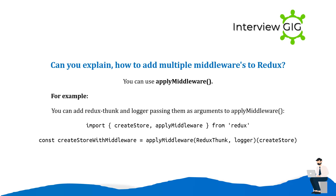Can you explain how to add multiple middlewares to Redux? You can use applyMiddleware. For example, you can add Redux Thunk and logger, passing them as arguments to applyMiddleware: import { applyMiddleware } from 'redux'; const createStoreWithMiddleware = applyMiddleware(thunk, logger)(createStore);